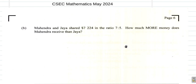It says how much more money — and you notice they have 'more' in full capital letters, which is important. You have the ratio 7 to 5.